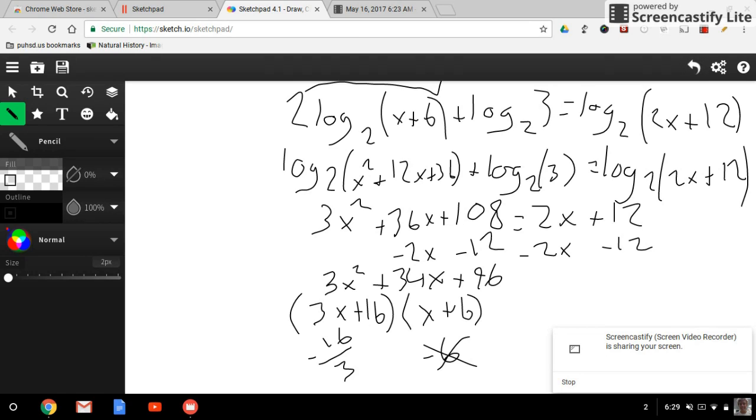When there are two logs on either side of the equation, they can cancel out, which is why I crossed out the log base 2 on the 3x squared side and the 2x plus 12 side. After that, I subtracted 2x and 12 from the left side, and it became 3x squared plus 34x plus 96. Factoring that out, I got 3x plus 16 and x plus 6.